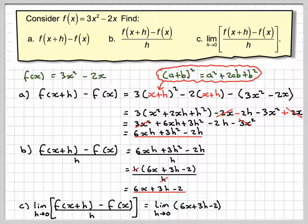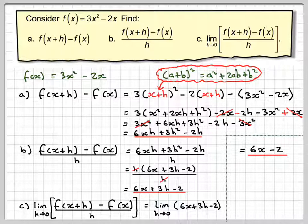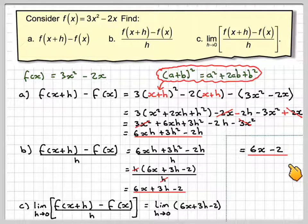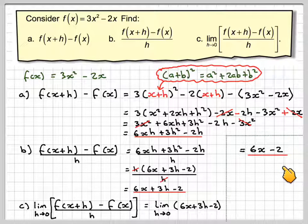What we do is make h very, very small—so small we can forget about it. We're left with 6x - 2 as the final answer. What we've found here is that we've actually differentiated 3x² - 2x by first principles to get 6x - 2.